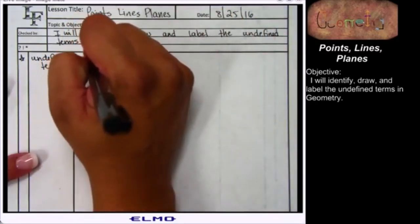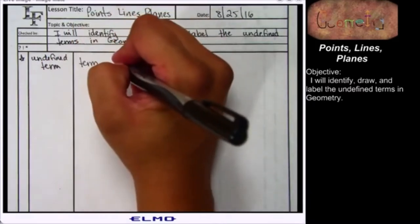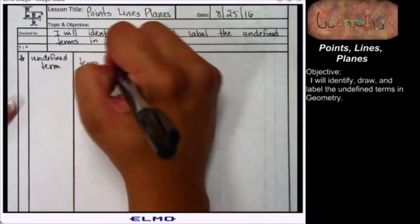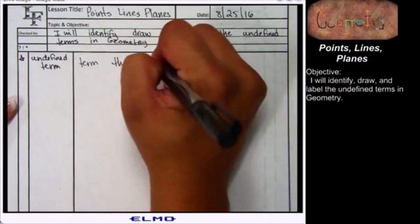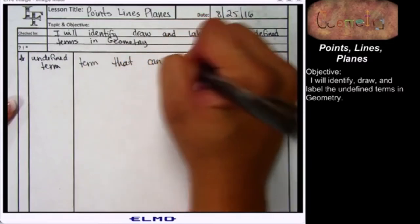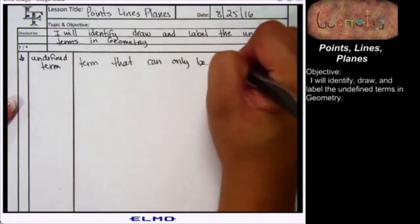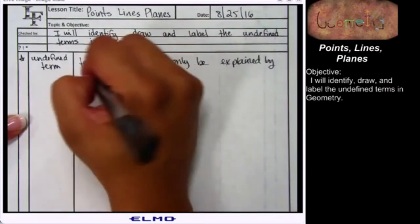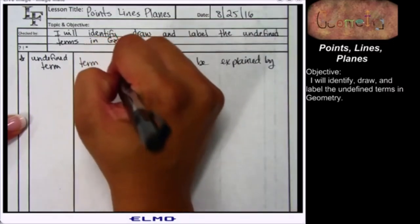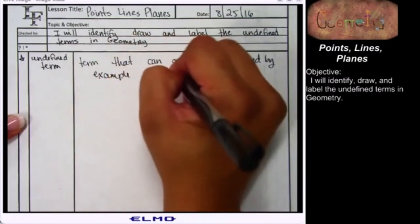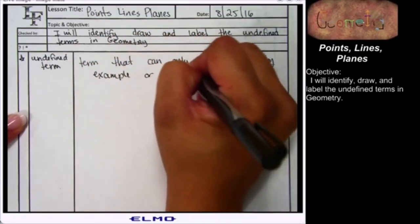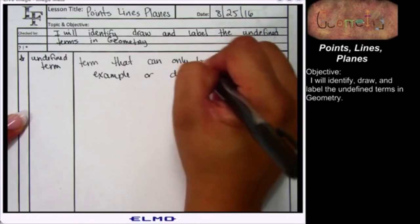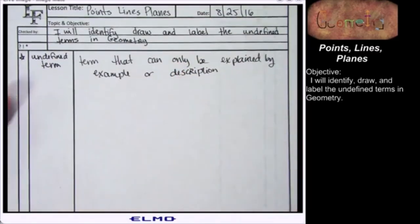An undefined term is going to be a term or a word that can only be explained by using some sort of example or some sort of description, which is different than a full definition.